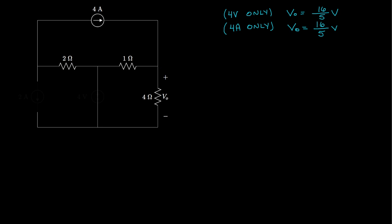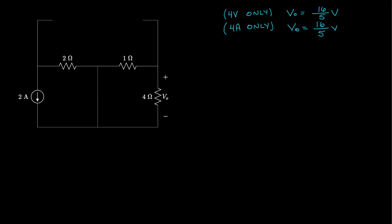Now let's keep only the 2-amp current source, setting the 4-volt and 4-amp sources to 0. In this case, we have a short connection across the 1-ohm and 4-ohm resistors, so we see no voltage across their combination, and of course no voltage across either one. With only the 2-amp source, the output voltage VO is 0.